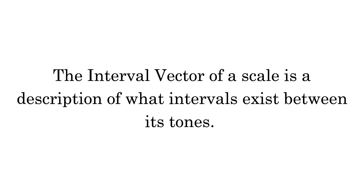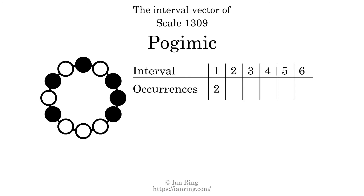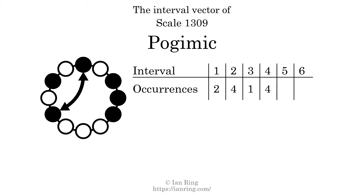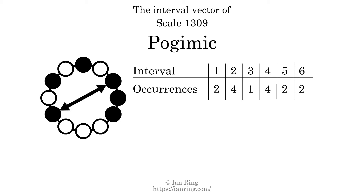The interval vector of a scale is a description of what intervals exist between its tones. There are 2 intervals with the size of 1 semitone, 4 intervals with the size of 2 semitones, 1 interval with the size of 3 semitones, 4 intervals with the size of 4 semitones, 2 intervals with the size of 5 semitones, and 2 intervals with the size of 6 semitones.